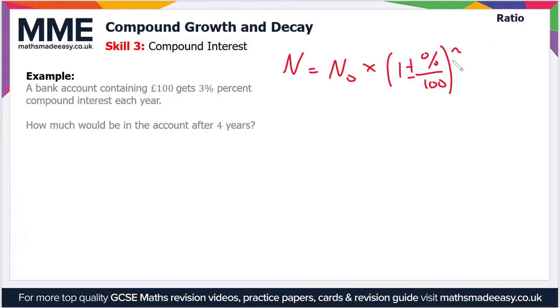So in this example, a bank account containing £100 gets 3% compound interest each year. How much would be in the account after 4 years? So in this example, £100 is our value of N₀, 3% we'll put into the brackets, and our value of lowercase n, the time periods, is 4 years.